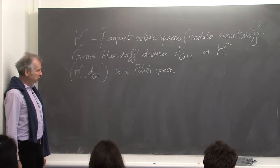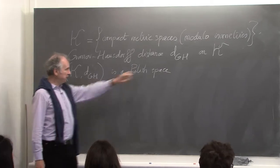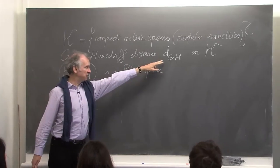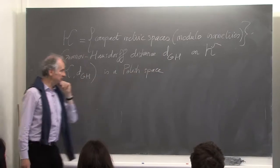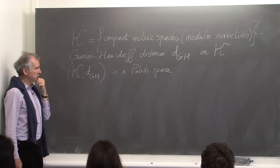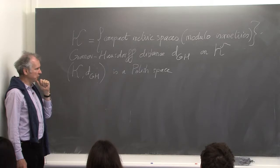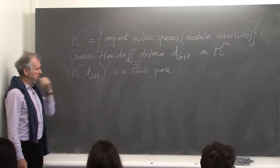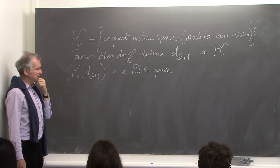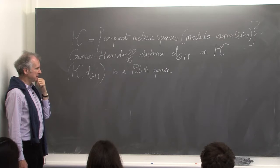The space script capital K equipped with d_GH is a Polish space, meaning it's a complete separable metric space. This is nice for us because, for instance, to deal with convergence of random variables, in particular convergence in distribution, it's nice to have values in a Polish space. Today I'm going to give another definition of the Gromov-Hausdorff distance, which is different and easier to work with.